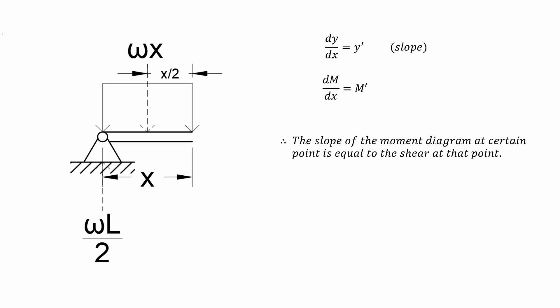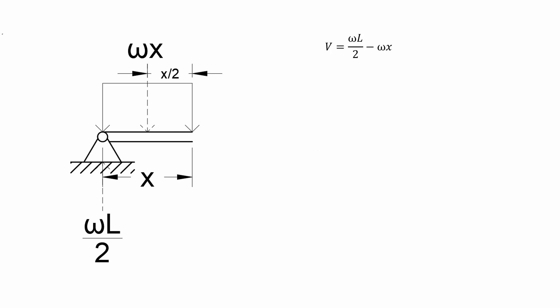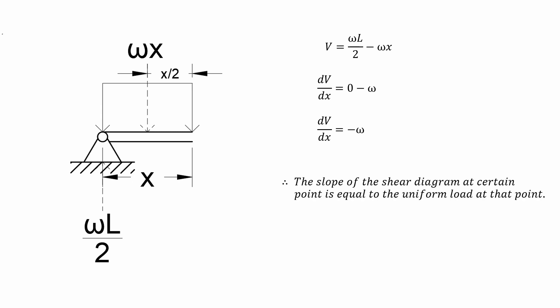Similarly, if we take the derivative of the shear force equation with respect to x, we get negative omega, which represents the value of the uniform load in the beam, and dV over dx is the slope of the shear diagram at a certain point. Therefore, we can conclude that the slope of the shear diagram at a certain point is equal to the uniform load at that point. That's rule number 2.